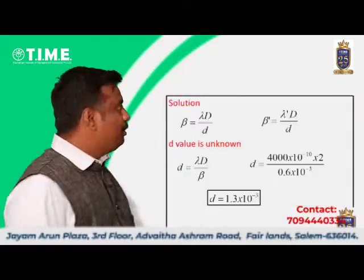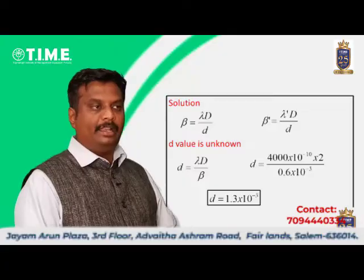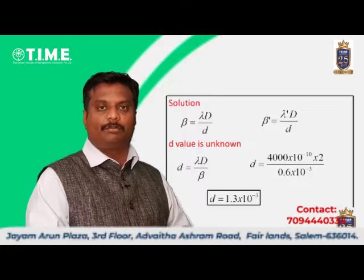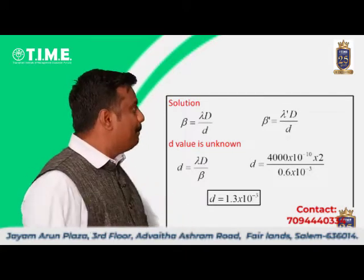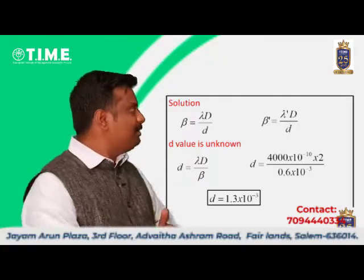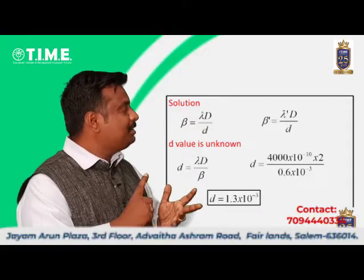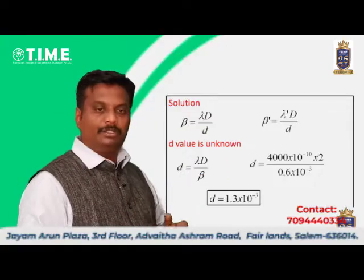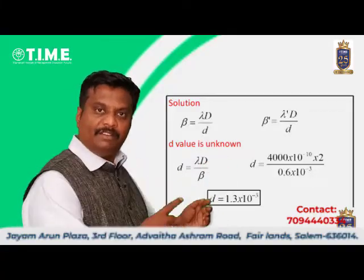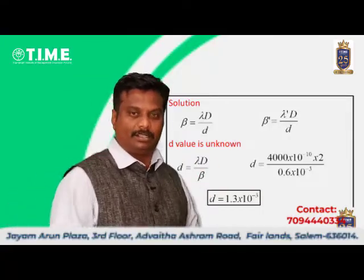Let us go to the solution. We know that beta is equal to lambda into capital D divided by small d. This is the general formula. To find the new fringe width beta dash, it equals lambda dash into capital D divided by small d. We will first find the value of d and then find lambda dash and substitute into the formula. This is the traditional method.